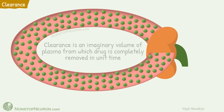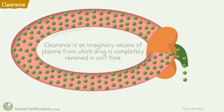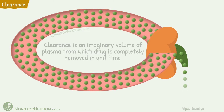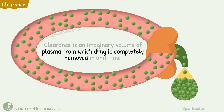Now as the blood passes through these organs, some drug is removed from it. Let's say in one minute, this much drug is removed from the plasma. Due to this elimination, concentration of drug has decreased throughout the plasma. Yet, there is no particular portion of plasma from which drug is completely removed.